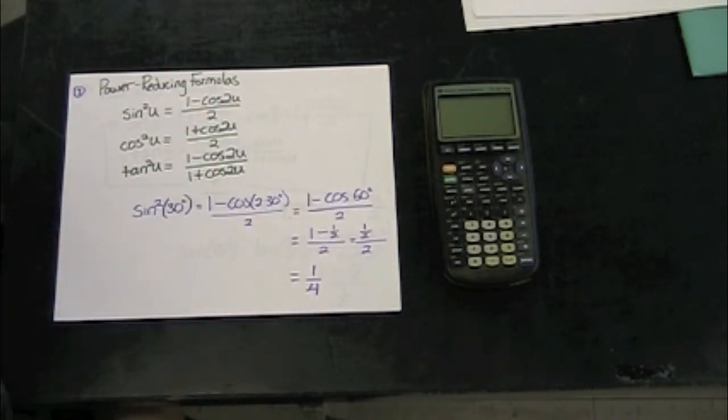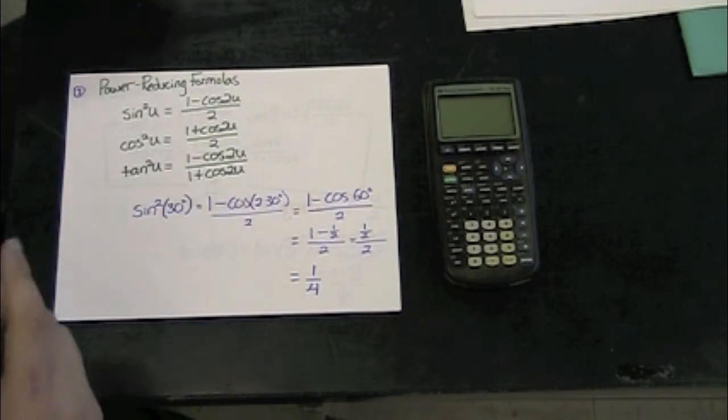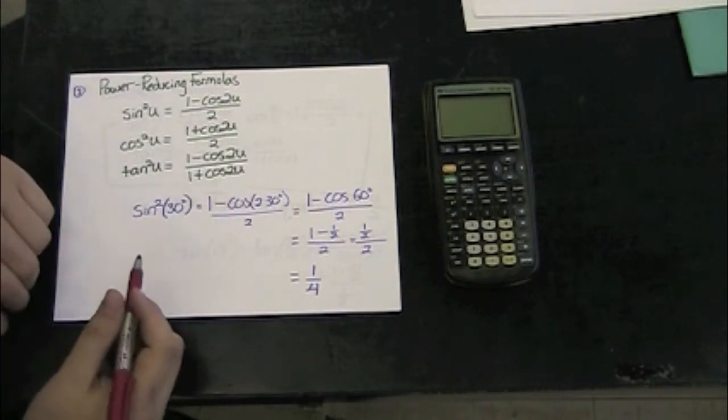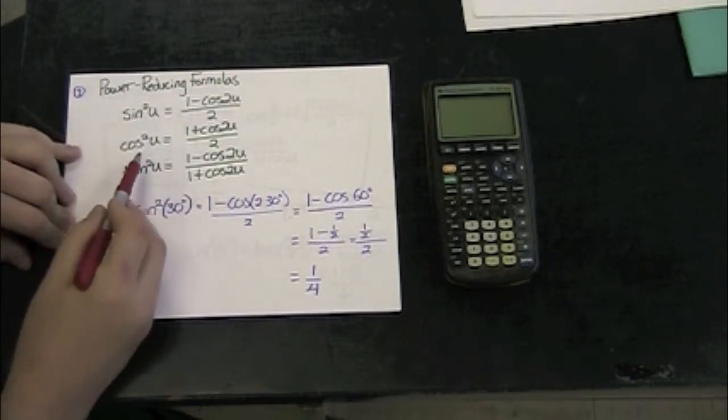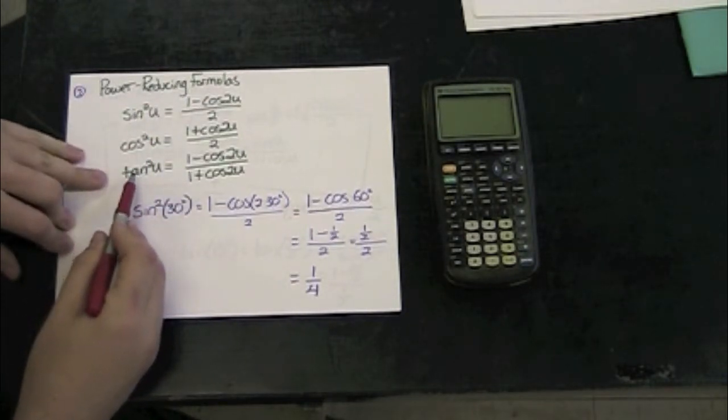It's going to be useful sometimes to rewrite expressions at a lower power. We have these power-reducing formulas, which are based off several of the identities we've used already. We have one for sine squared, one for cosine squared, one for tangent squared.